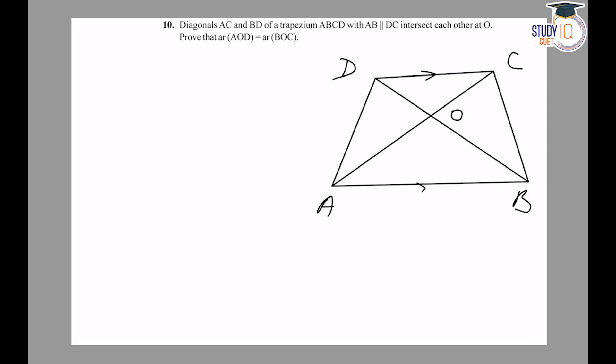Now I have to prove that area of AOD equals area of BOC. If you look at this figure, there are two triangles: triangle ABD and triangle ABC. I have two triangles on the same base AB and between the same parallel lines AB and DC.